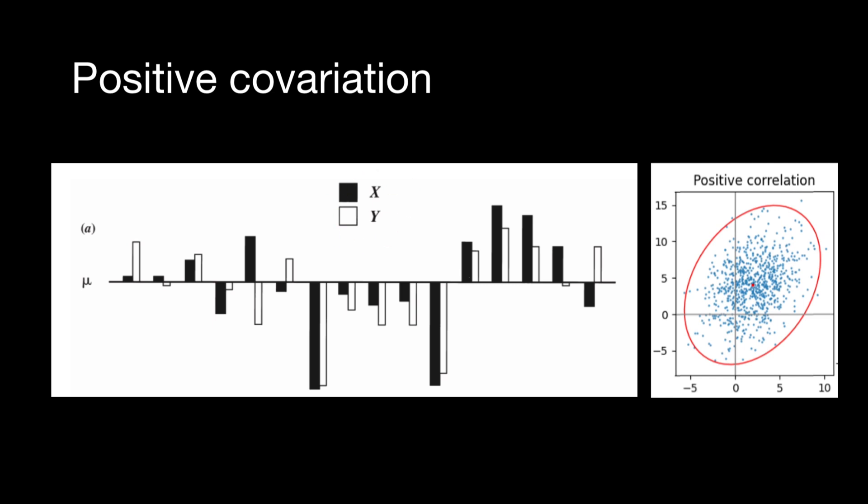For example, a swine breeder may want to know if daily weight gain is related to feed conversion. A dog breeder may want to know if absorbed temperament is related to breeding value for temperament. In each case, the breeder wants to know how two traits or values, in traditional mathematical terms two variables, covariate.